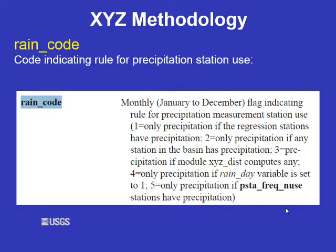A RAIN_code of 02 means that PRMS examines all the stations in your data file and calculates precipitation if any one of those stations has precipitation. A RAIN_code of 03 means PRMS calculates precipitation even if all stations have zero precipitation — since precipitation generally increases with elevation, PRMS will likely produce precipitation at higher elevations using XYZ. A RAIN_code of 04 means precipitation is calculated if the rain_day variable in your input file is set to 1. A RAIN_code of 05 uses the PSTAY_NUSE parameter to indicate a separate set of stations for precipitation frequency. It is good to examine the rainfall frequency at your stations to determine how to set these parameters.